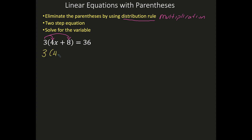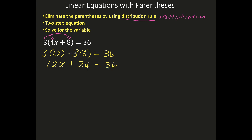So the 3 here is going to multiply your 4x, and because it's positive, put a plus sign — you must have an operator between — it's going to multiply your 8, and it's equal to 36. Now once I distributed the 3 within the parentheses, I noticed that my problem became a two-step linear equation.